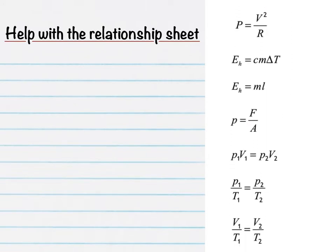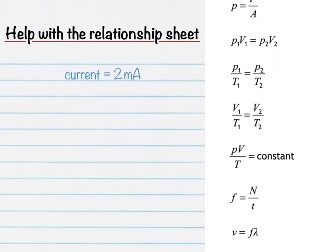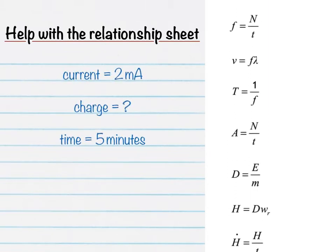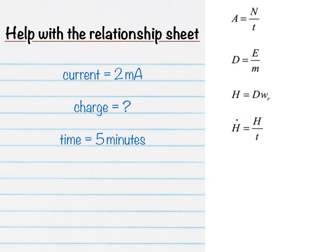Let's say you're answering a question where you're told that the current in a circuit is 2 mA and you have to calculate the charge transferred after 5 minutes. Which equation should you be using?